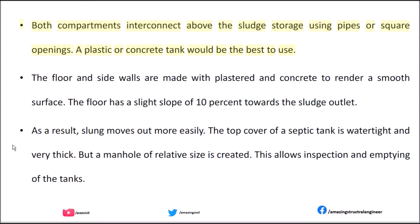Both compartments interconnect above the sludge storage using pipes or square openings. A plastic or concrete tank would be best to use. The floor and side walls are made with plastered concrete to render a smooth surface. The floor has a slight slope of 10% towards the sludge outlet so that sludge moves out more easily. The top cover of a septic tank is watertight and very thick, but a manhole of relative size is created. This allows inspection and emptying of the tank.